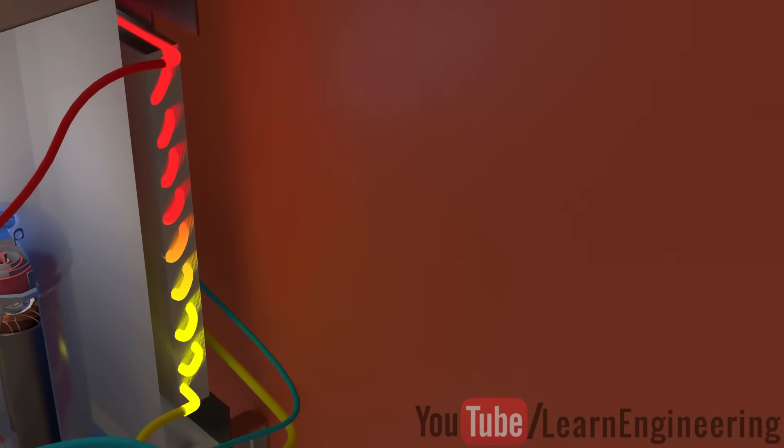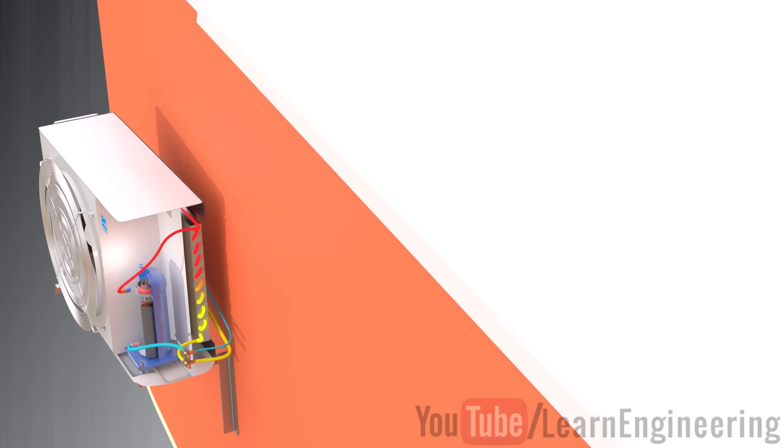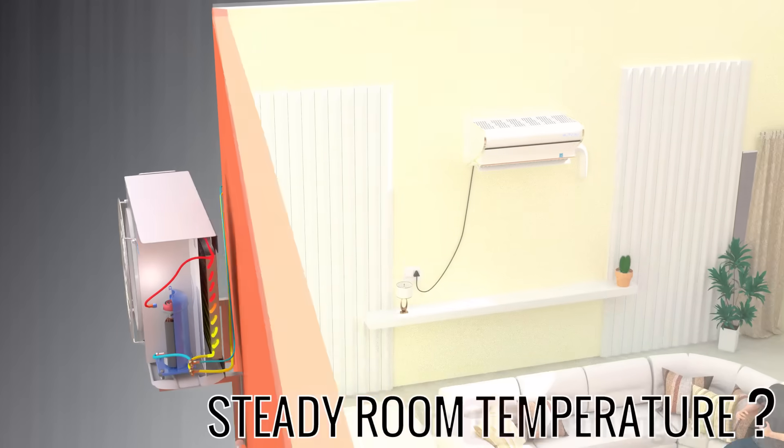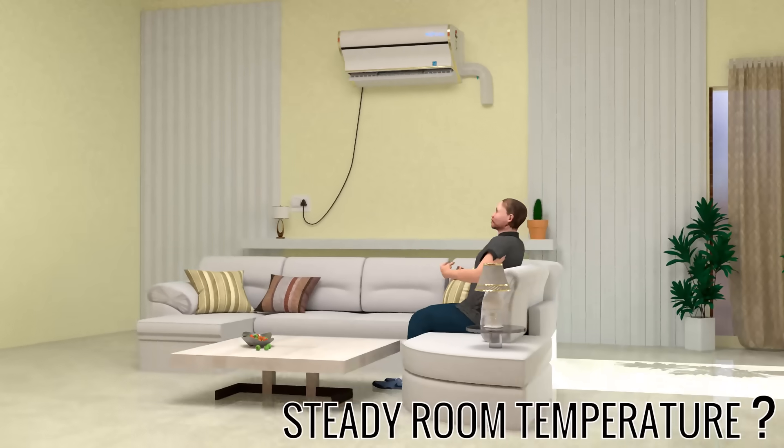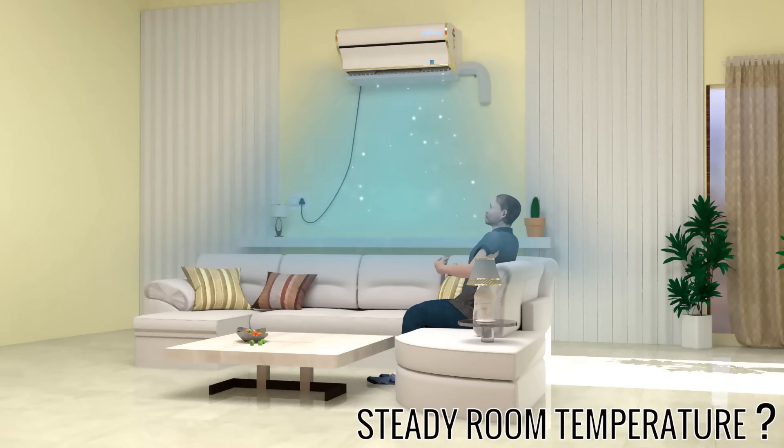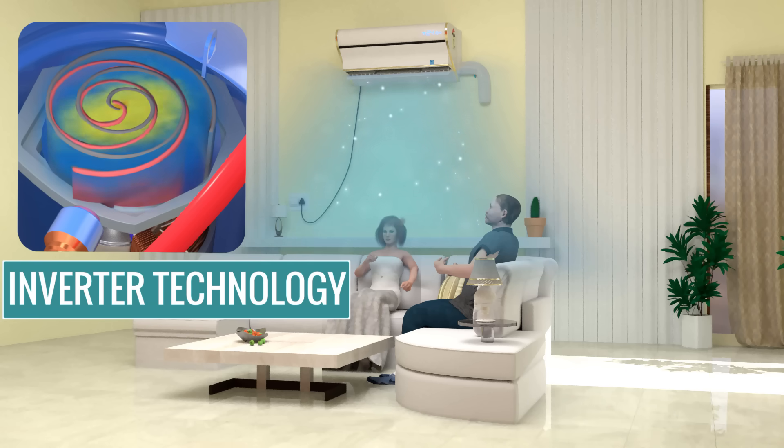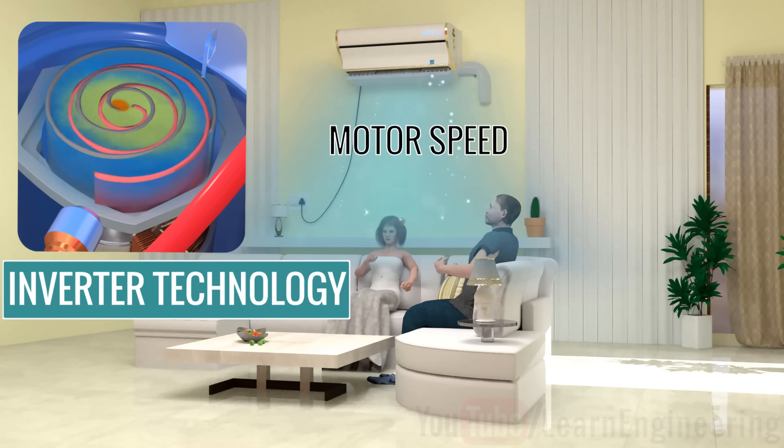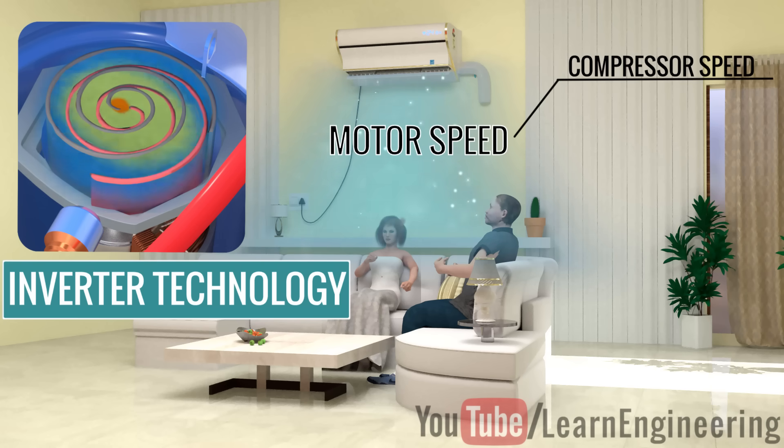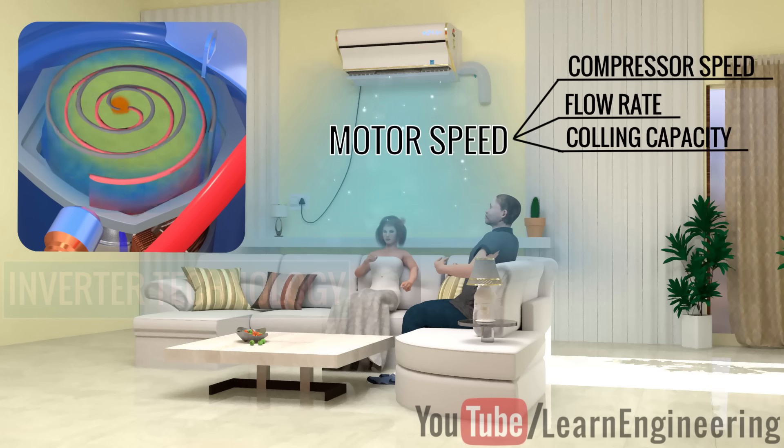Do you know how your air conditioner is able to maintain an almost steady room temperature, irrespective of the load? Modern air conditioners use a variable speed motor technology called inverter technology for better temperature control. Just by adjusting the motor speed, the compressor speed, the refrigerant flow rate, and the cooling capacity can be controlled accurately.